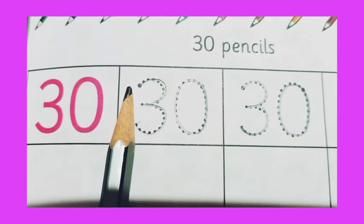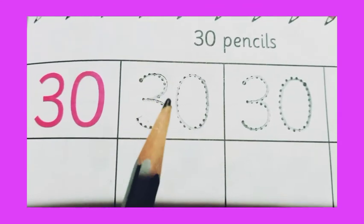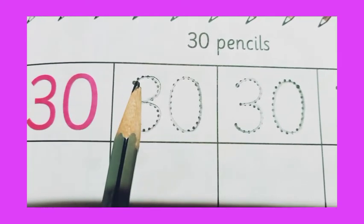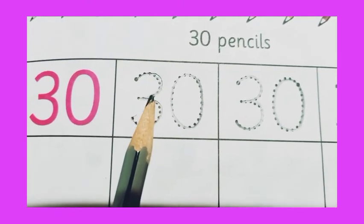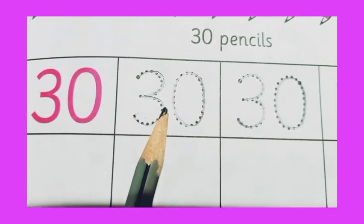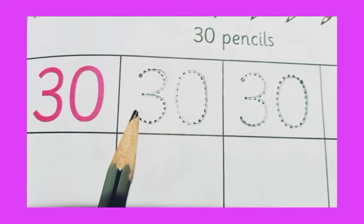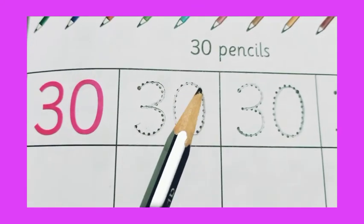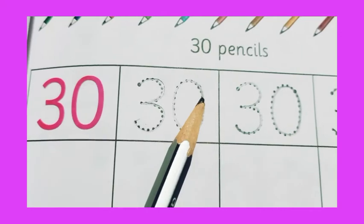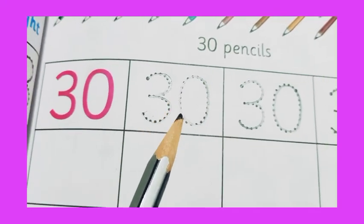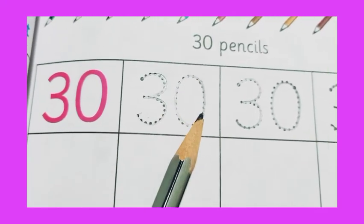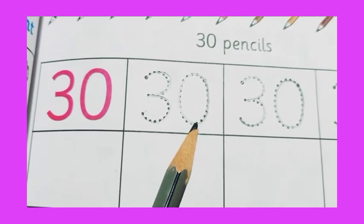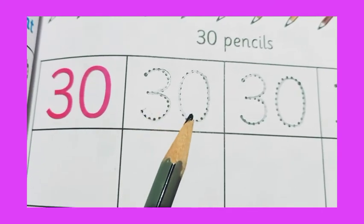Now students, it's time to write number 30. So let's start. First of all, we draw a curve and a semicircle, join another semicircle and a curve. This is what becomes 3. Then we draw a circle. So this becomes 0. So 3, 0 is what? 30. 3, 0, 30.